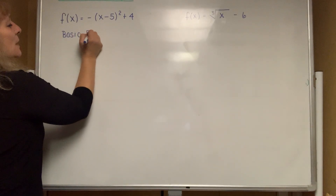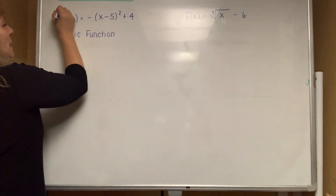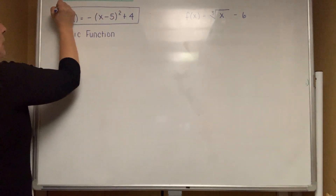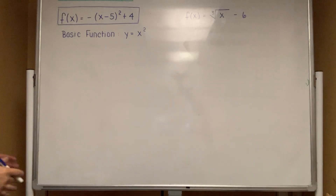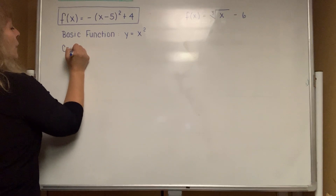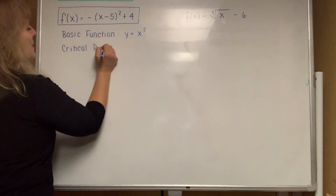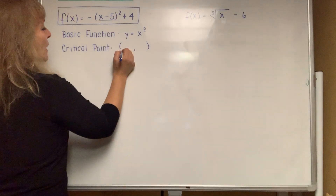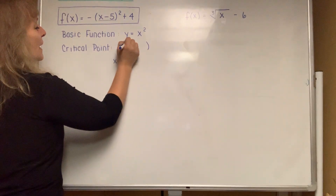What is the graph of f(x) = -(x - 5)² + 4 most likely resemble? You have to know that it basically resembles y = x², and you already know that that is a parabola. When it comes to picking out the critical point, we always figure it out the same way. Take the x part and set it equal to 0, and you're going to solve and get x = 5.